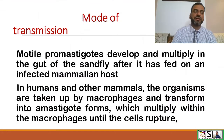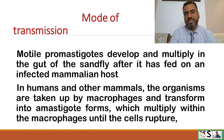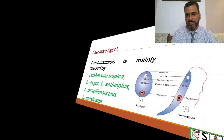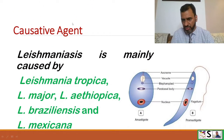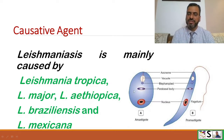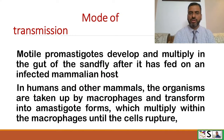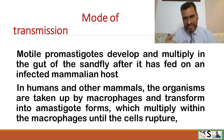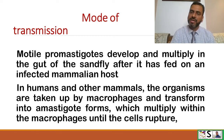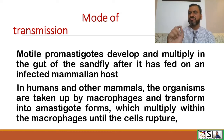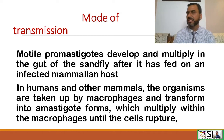How does it spread? Leishmaniasis actually possesses two stages of development. One is the Promastigote — here you can see this one — and the other is the Amastigote. The Promastigote stage develops and multiplies in the gut of the sand fly after it has fed on the infected mammalian host, like a patient or any other animal.